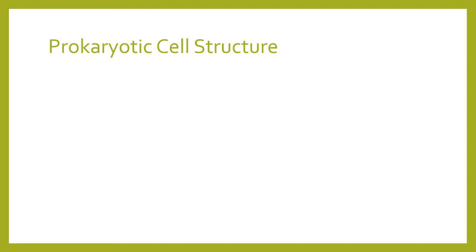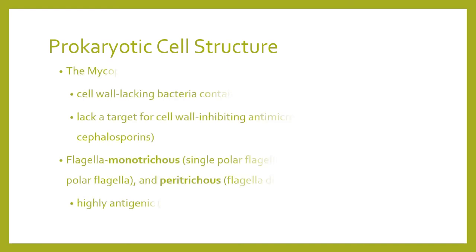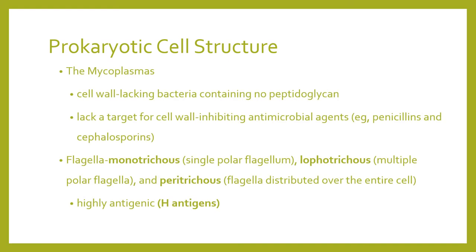The third type of prokaryote includes organisms that do not contain a cell wall — these are your mycoplasmas. Because they don't have a cell wall, they don't have a target for antibiotics that inhibit cell wall synthesis like penicillins and cephalosporins. Mycoplasmas are usually treated with macrolides, which go through the cell membrane and disrupt RNA synthesis.